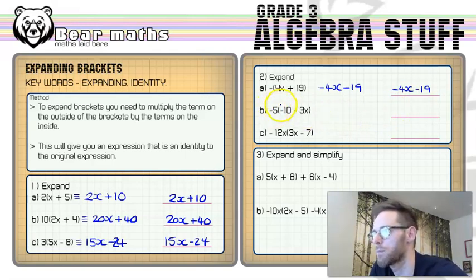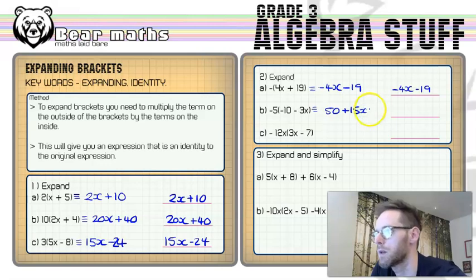Now, b, we've got minus 5 multiplied by minus 10. When you've got two negatives, you multiply the two negatives together and you get a positive. So that is 50. And then you've got this bit multiplied by this bit, the outside multiplied by the second term inside the bracket. Negative times negative again, it's going to be positive. So 5 times by 3 is 15 and then we've got the x. Now I could write this one the other way around because I like to put the x term first. So 15x plus 50.